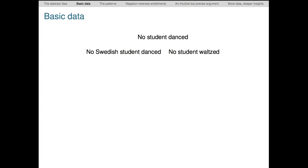These sentences are exactly like the previous ones except with determiner a replaced by no. The top sentence is no student danced. The lower left sentence is no Swedish student danced. And the lower right sentence is no student waltzed. Whereas before we had arrows going up, now we'll have arrows going down. First, if no student danced, then no Swedish student danced. However, the reverse doesn't hold. We can assume no Swedish student danced, but still deny that no student danced. Just think of dancing Canadian students who are consistent with the first sentence, but not the second.